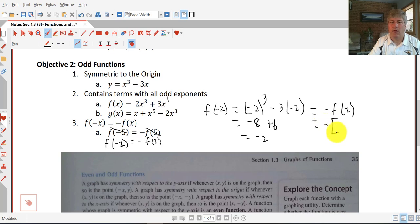So the opposite of 2 cubed minus 3 times 2 is the opposite of 8 minus 6. So I get the opposite of 2.